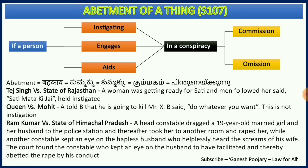The first case law is Teich Singh versus State of Rajasthan. A woman was getting ready for Sati, and men followed her saying 'Sati Mata Ki Jai.' Since Sati is an offense, those people instigated her to commit Sati, making them part of the abetment — they abetted her to commit Sati.